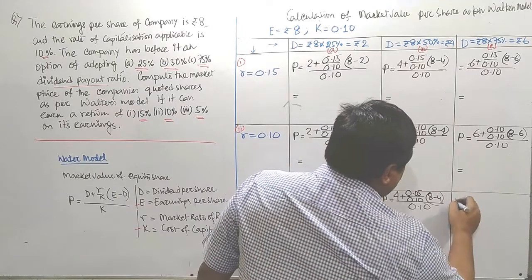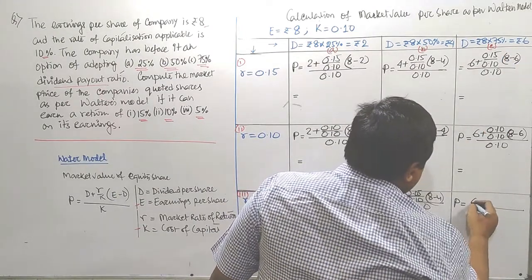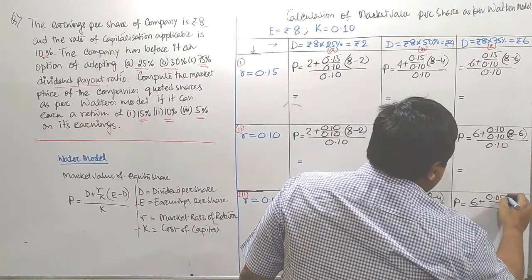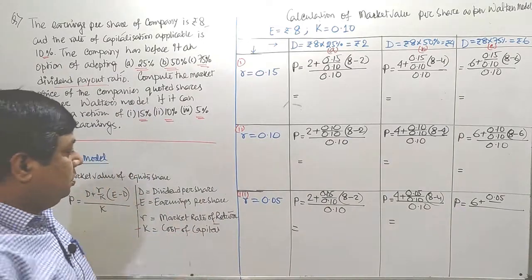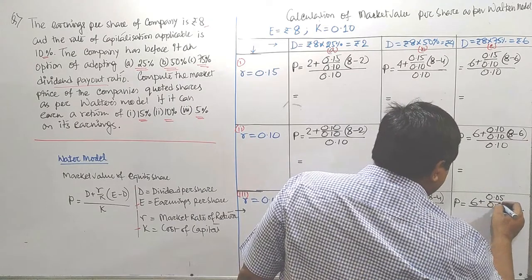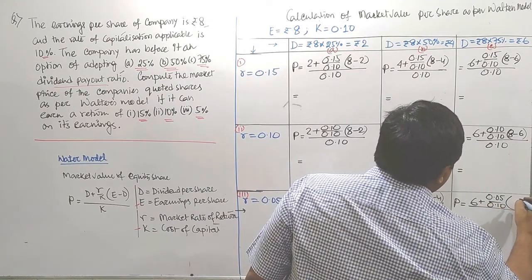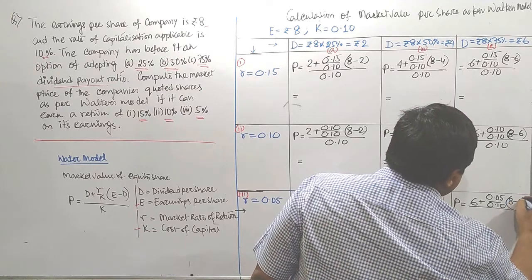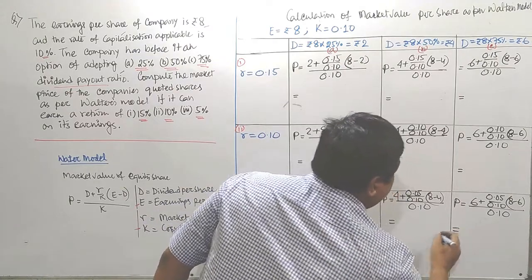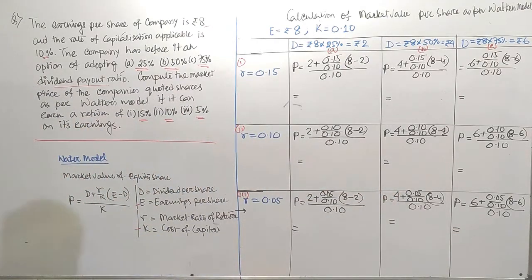Finally, third row, third column. D is 6, plus R by K, R is 0.05, K is 0.10, E minus D, 8 minus 6, divided by 0.10. Now one by one, we have to calculate each and every answer.